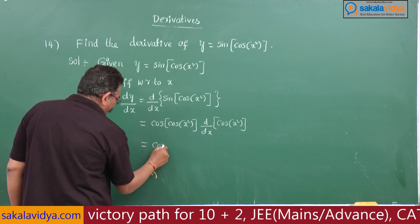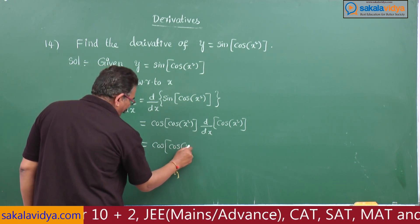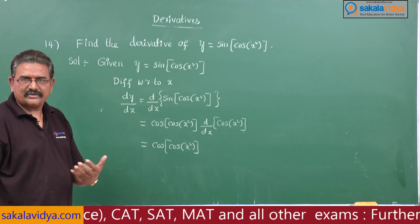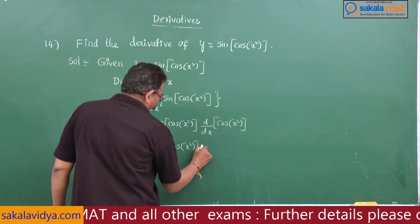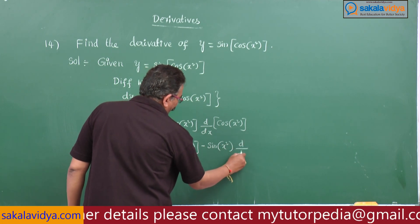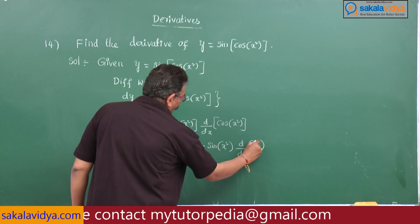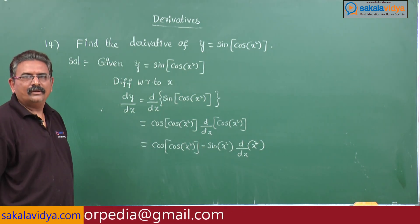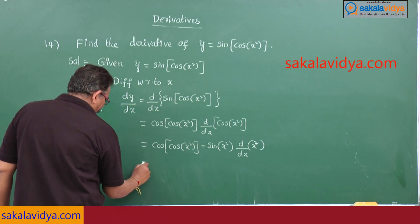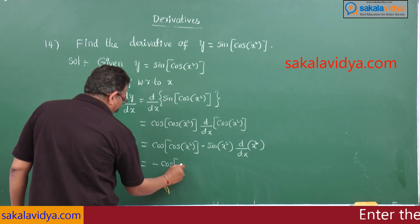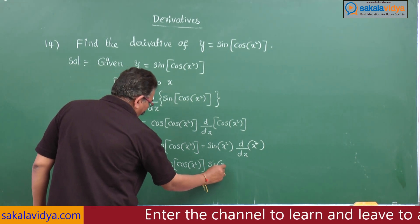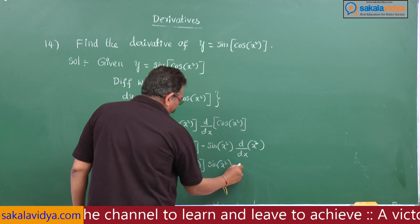Now we have to find the derivative of cos(x²) multiplied by the previous term. The derivative of cos gives minus sin(x²), so we write cos(cos(x²)) into minus sin(x²), then multiply by d/dx of x². The derivative of x² is 2x.